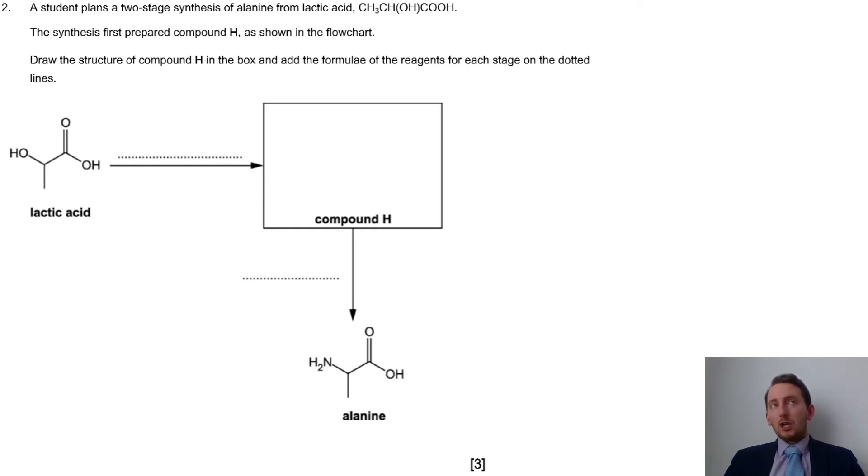Because then I know, the one thing I do know about my synthetic routes is that it's quite easy to go from a halogen to then that NH3, it can react with ammonia. So you have to be thinking a little bit ahead, thinking, okay, well, what's reasonable to go from H to alanine? We've got to try and work away that a little bit.